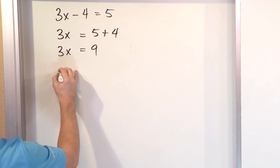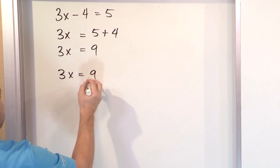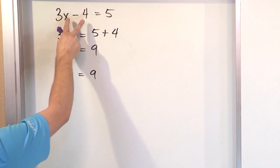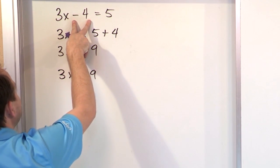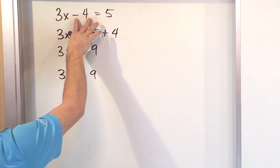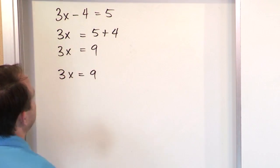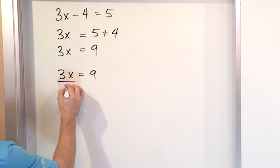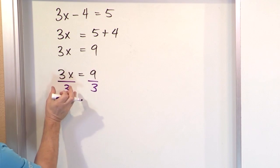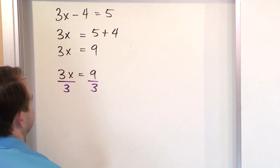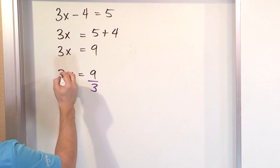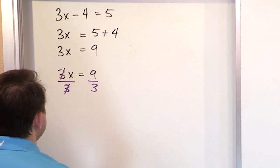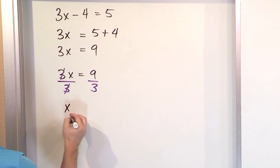Now let me rewrite it. We have 3x equals 9, and we want to get x by itself, so we have to do the opposite operation. Since there was subtracting 4, we did the opposite — adding 4. Here we're multiplying by 3, so to get rid of the 3 we divide by 3. 3 divided by 3 is 1, so they cancel, leaving just x.